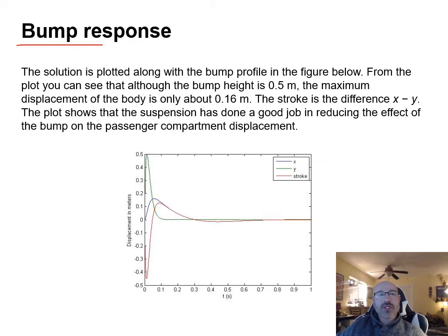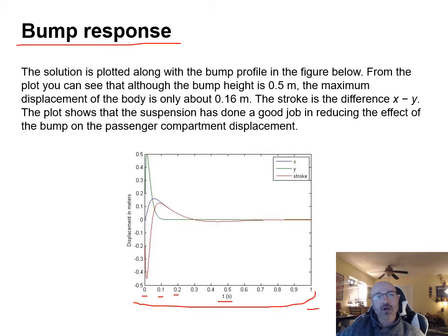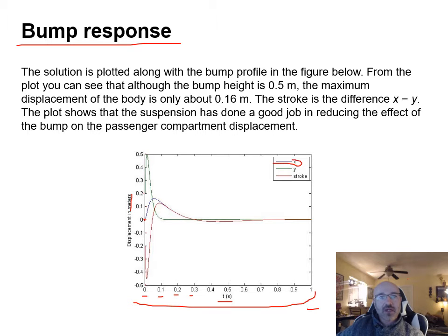The bump response solution is shown in a plot with time in seconds on the x-axis (0 to 1 second, intervals of 0.1 s) and displacement in meters on the y-axis (−0.5 to 0.5 m). The x curve starts at zero, reaches a maximum of about 0.15 m, drops to about −0.07, then levels off around 0.4 seconds.